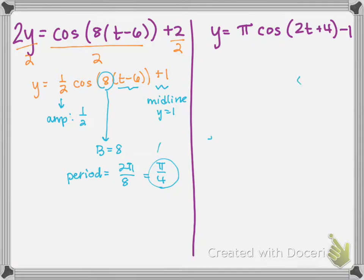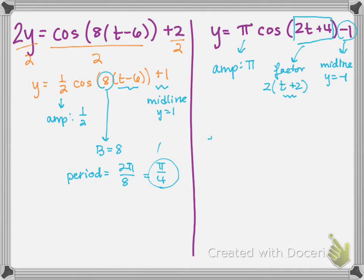For this last one, the minus 1 is indicative of a midline at y equals negative 1. So that's been shifted down vertically by one unit. The π out front makes us have an amplitude by the value of π. And then inside this 2t plus 4, I have to first factor it and factor the 2 out so that my variable on my t is 1. And that leaves me with 2 times t plus 2. So you see there's a horizontal shift left of 2, but that's not part of this problem.